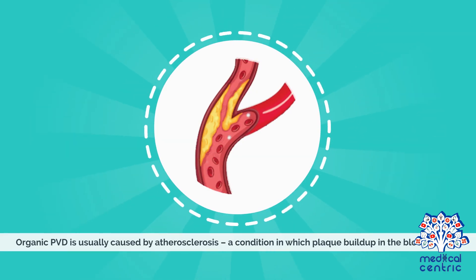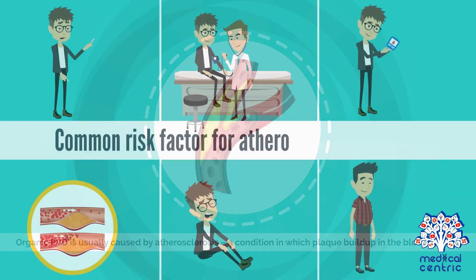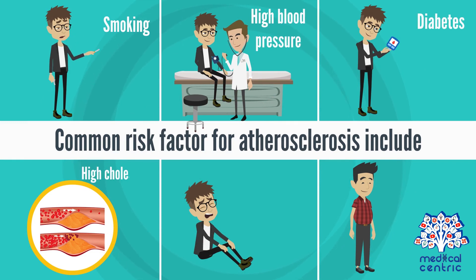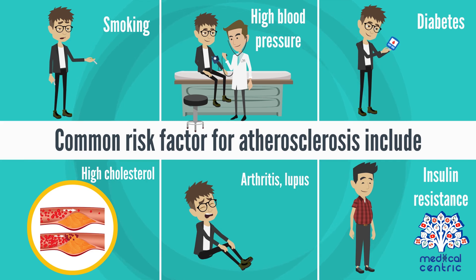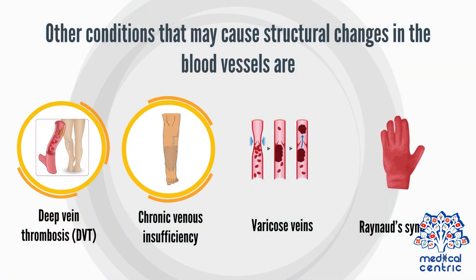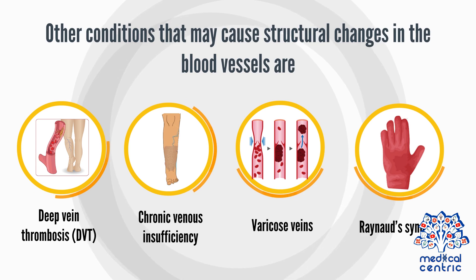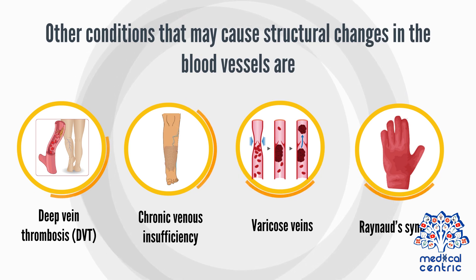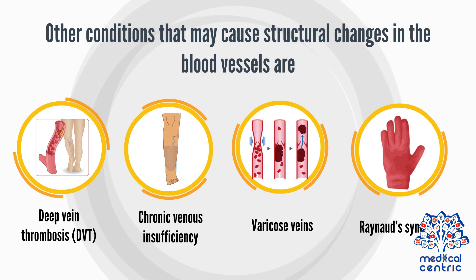Organic PVD is usually caused by atherosclerosis, a condition in which plaque builds up in the blood vessels. Common risk factors for atherosclerosis include smoking, high blood pressure, diabetes, high cholesterol, inflammation from arthritis, lupus, or other conditions, and insulin resistance. Other conditions that may cause structural changes in the blood vessels include deep vein thrombosis (DVT), chronic venous insufficiency, varicose veins, and Raynaud's syndrome.